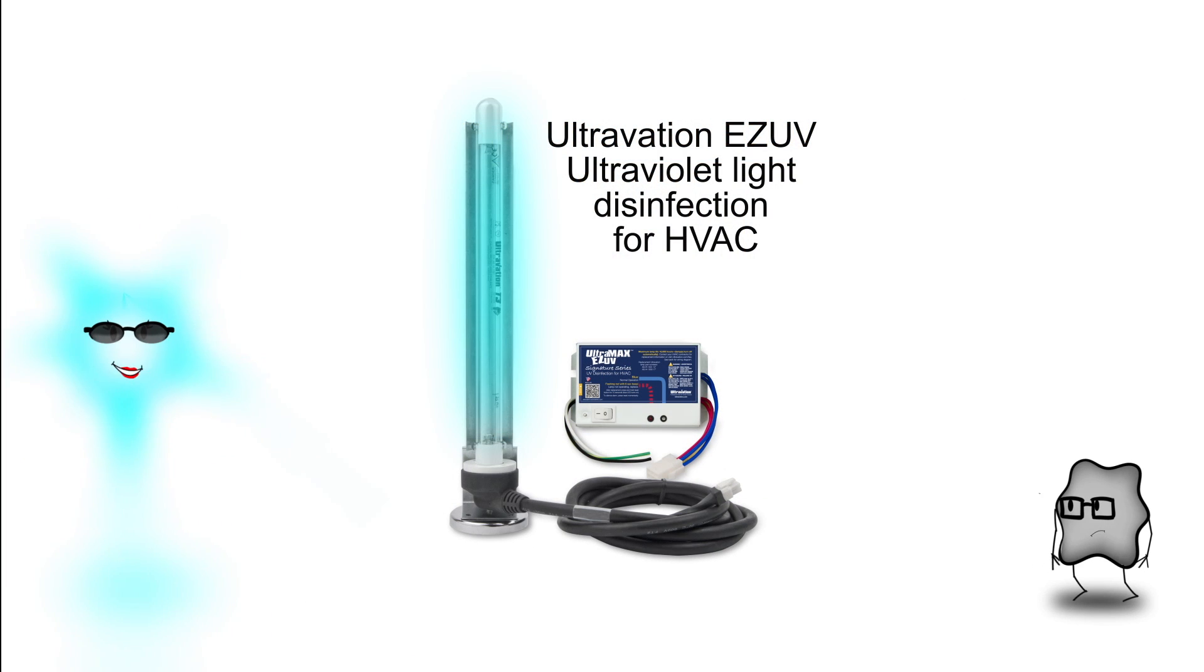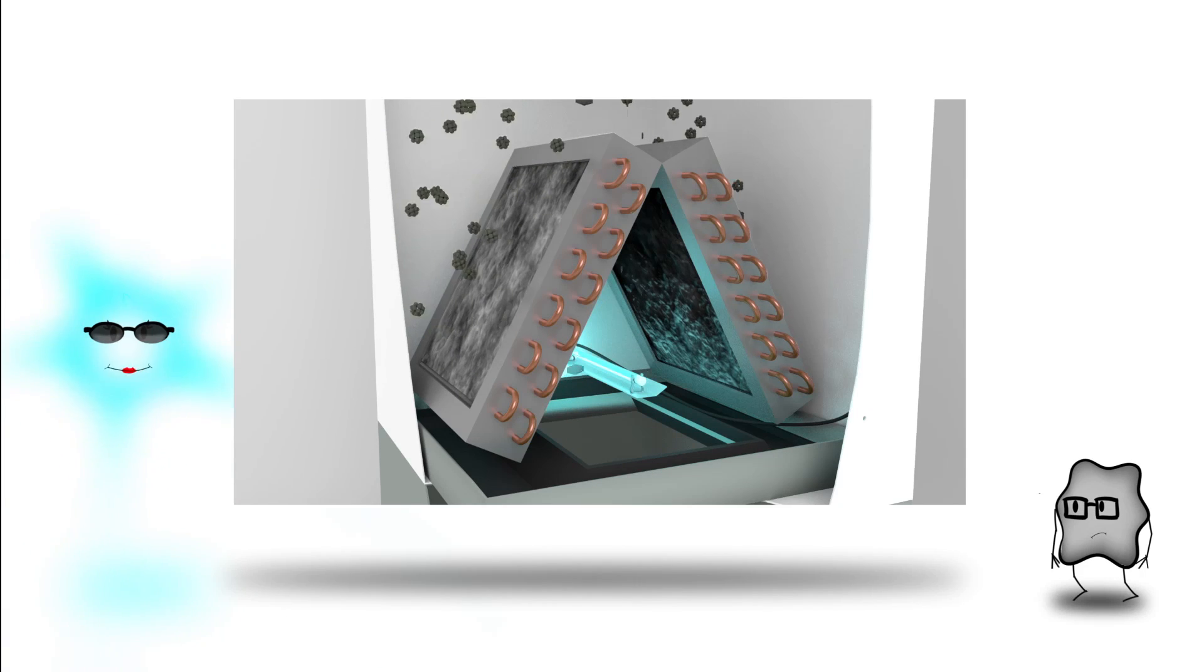Ultraviolet lamps create the same UVC light. These lamps are used to disinfect surfaces, air, and water.